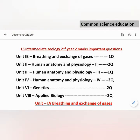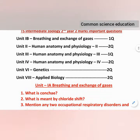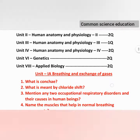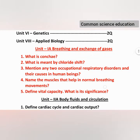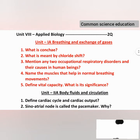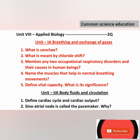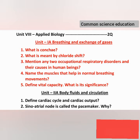First unit: Breathing and Exchange of Gases. Questions include: What is conchi? What is meant by chloride shift? Mention any two occupational respiratory disorders and their causes in human beings. Name the muscles that help in normal breathing movements. Define vital capacity and what is its significance?